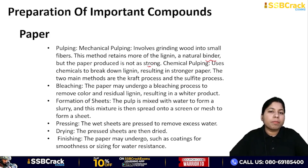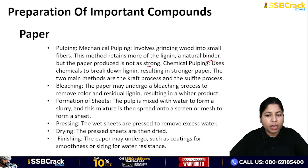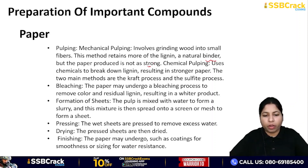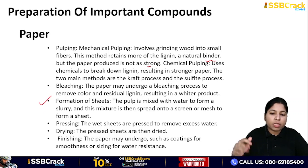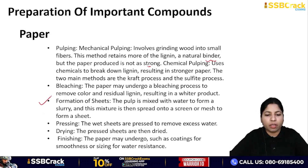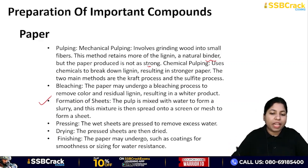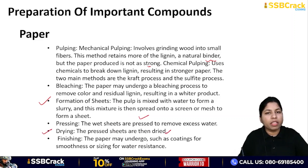After pulping, wood is ground into smaller fibers. Then bleaching occurs — excess color and residual lignin are removed, resulting in a whiter product. After bleaching, the pulp is mixed with water to form a slurry, which is spread on a screen or mesh to form a sheet. Then pressing occurs — wet sheets are pressed to remove excess water. Then drying happens — pressed sheets are then dried.